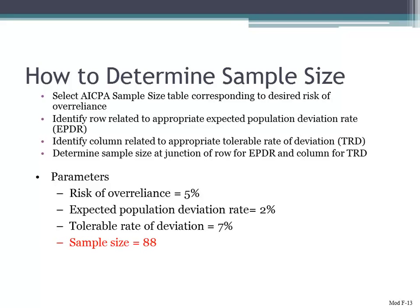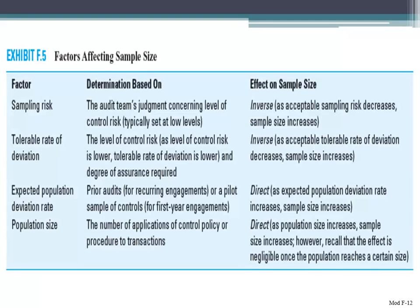F6 deals with the sample size table for 5% risk of overreliance — that's your number of expected deviations. What you're trying to find is, based on my expected population deviation rate and my tolerable rate of deviation, what would be my sample size? Your sample size is really going to be driven by those two things.